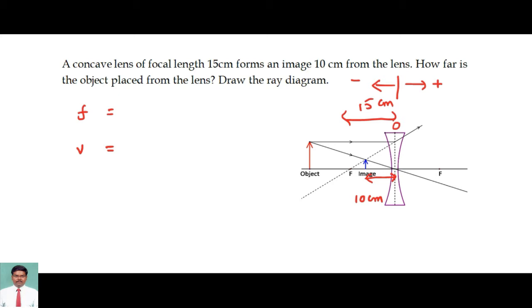So the focal length in this case is minus 15 cm. Normally, the concave lens is always having a negative focal length, and image distance V which is minus 10 cm. The minus sign is because from the optic center to the left side.